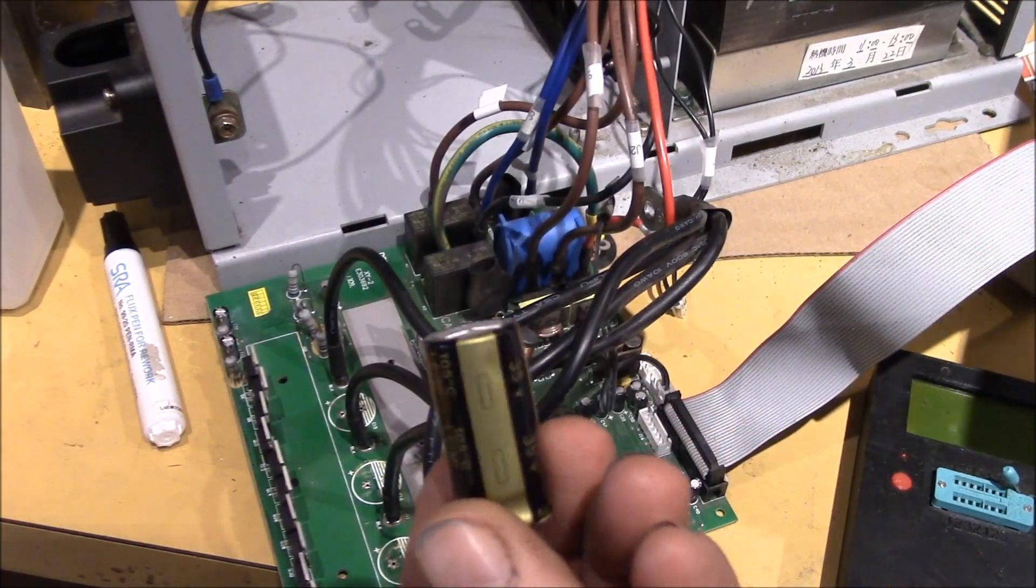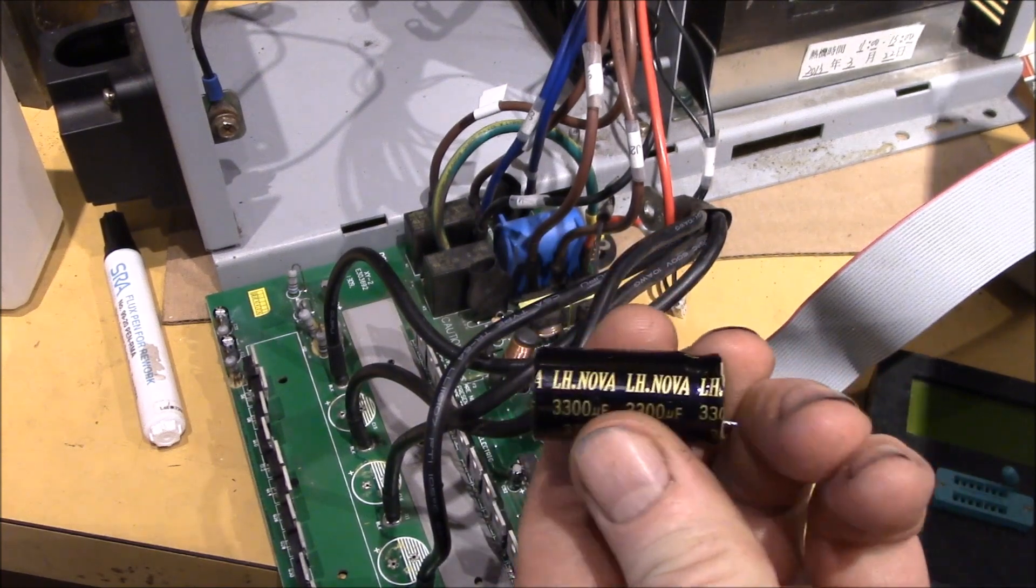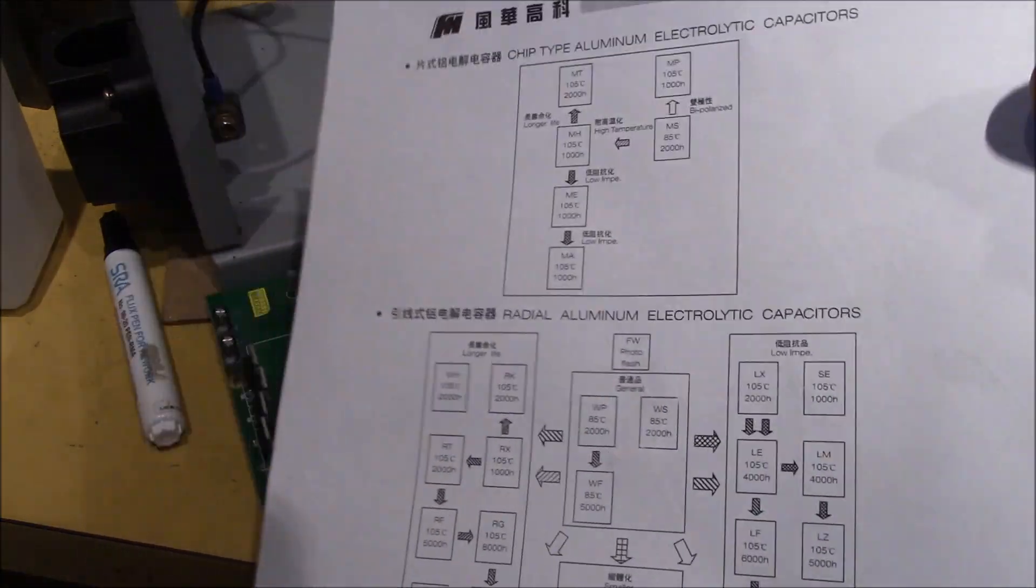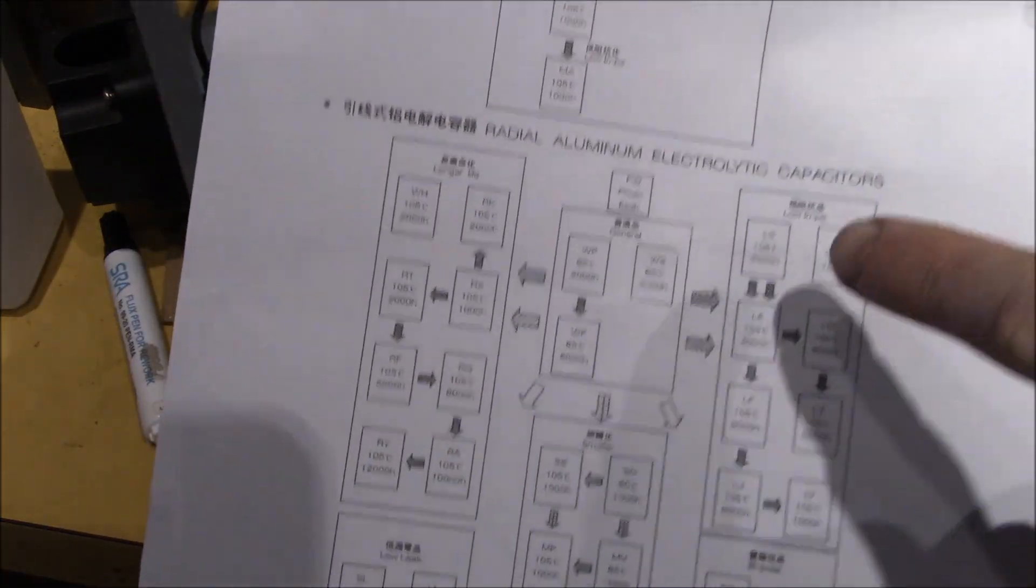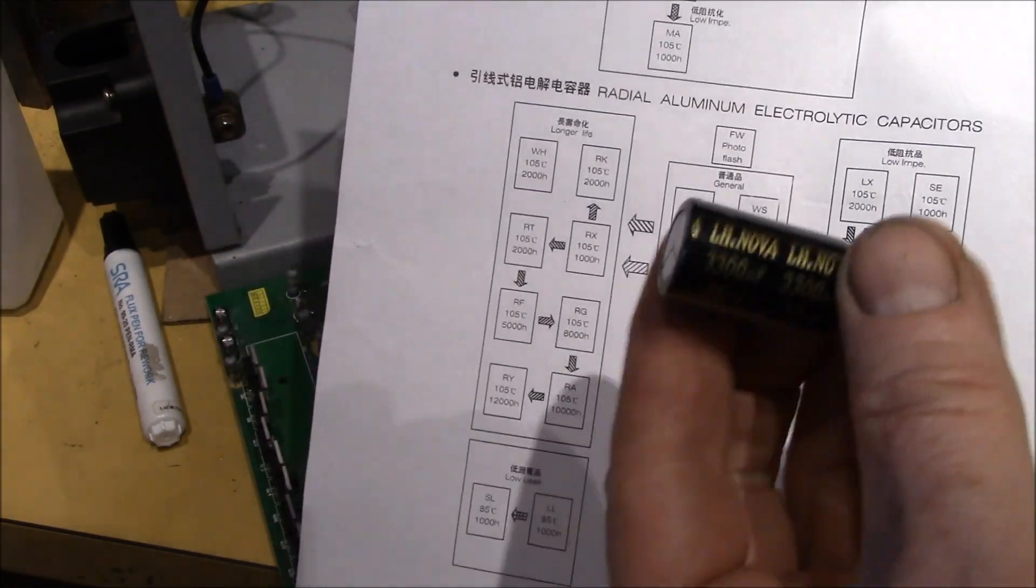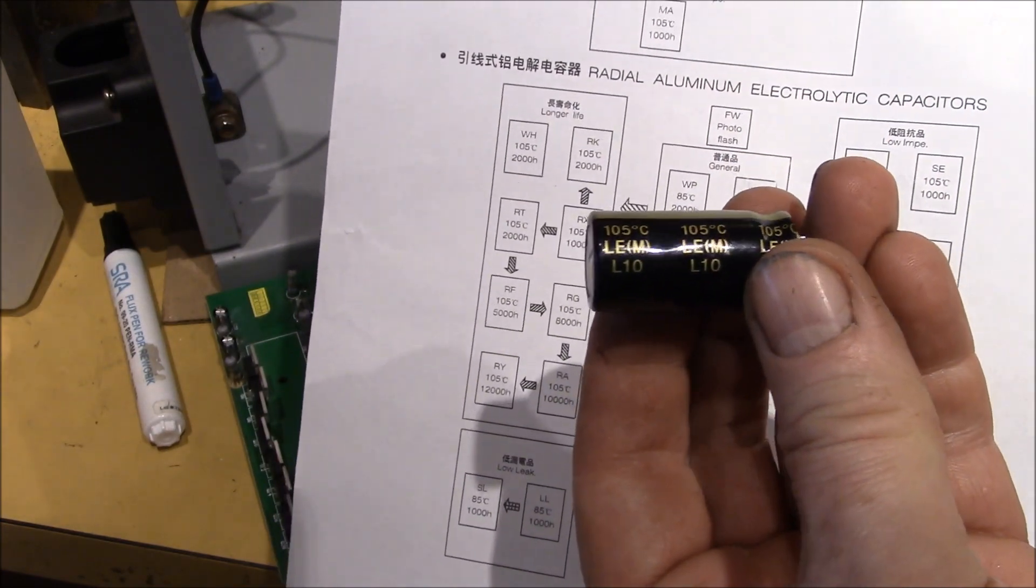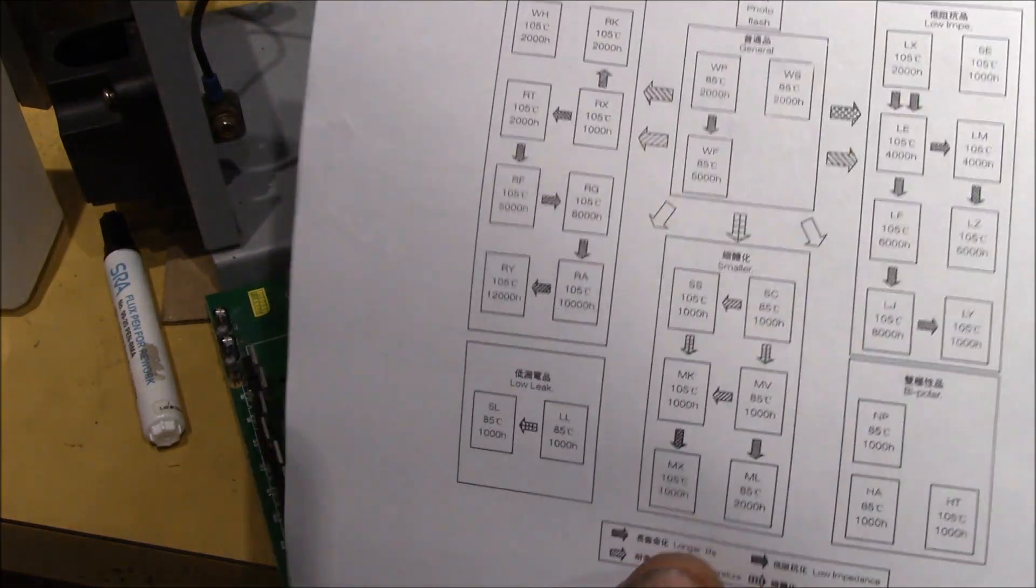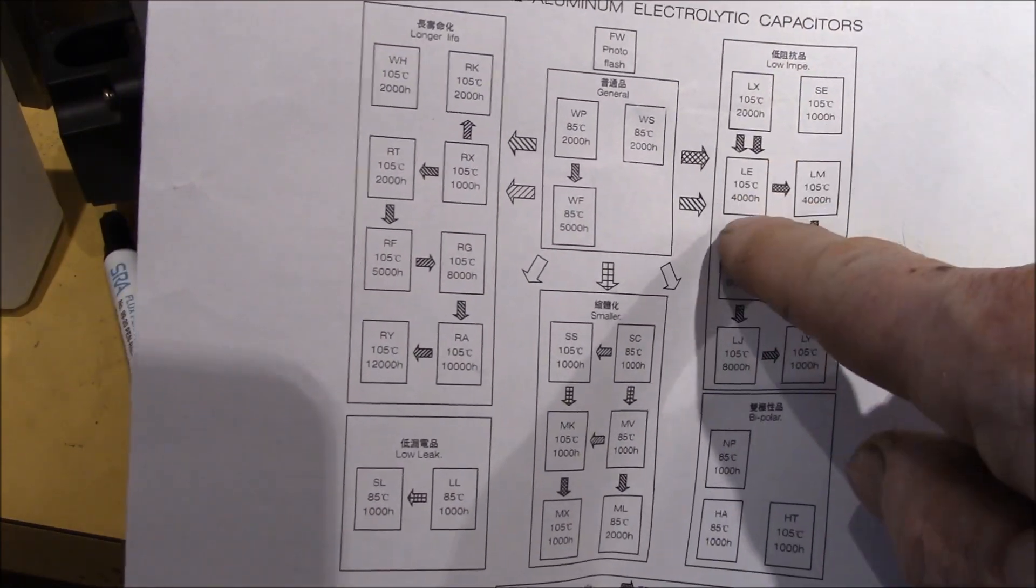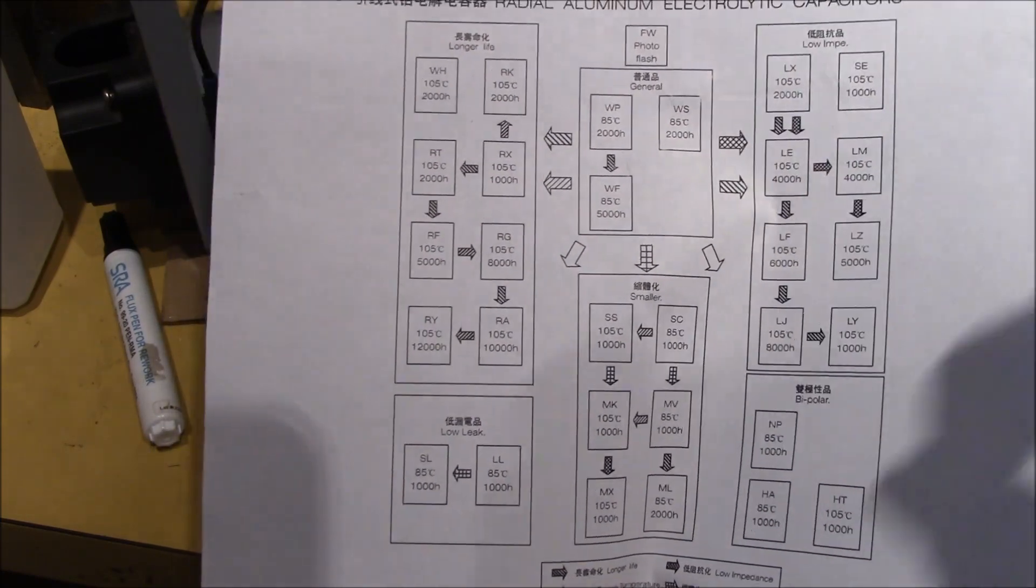I wasn't able to find a lot of information on these LH Nova, but they're apparently made in Taiwan. And I found a data sheet here, or kind of an explanation. So these are the radial aluminum electrolytic. And then these are the LE or M series. And if you come down here, we're low impedance. And the LE and LM are 105C 4000 hours.